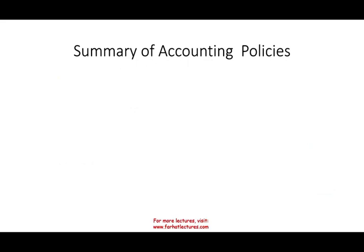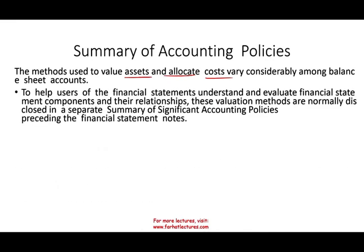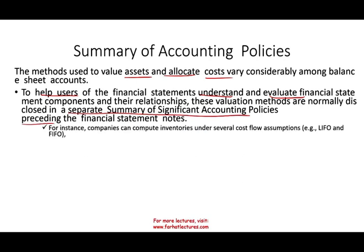The second type of supplemental information is the summary of accounting policies. Which method did we use to value the assets and allocate costs among the balance sheet accounts? We have many methods, so we have to tell users which method we are using. We need to help users understand and evaluate the financial statement components and their relationships. We must disclose this summary of significant accounting policies preceding the notes in the financial statements.